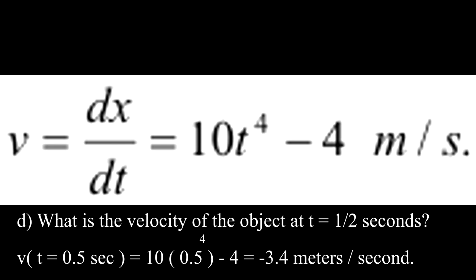Question D. What is the velocity of the object at t equal to 1 half seconds? Setting t equal to 1 half in the equation for velocity v, we get minus 3.4 meters per second.